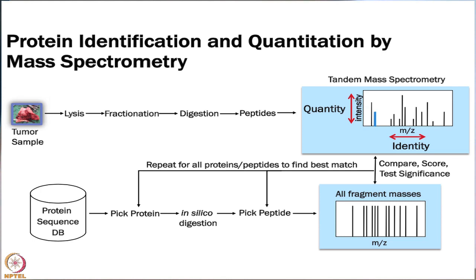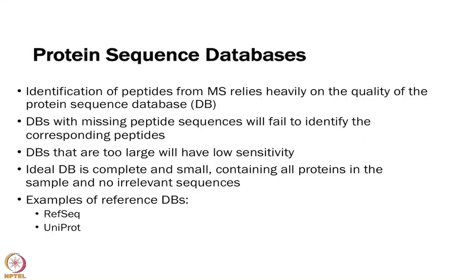If your peptide or protein is not in the database, you are never going to find it. Sequencing can help us make sure we have the right sequences in our database. Databases with missing peptide sequences will fail to identify them. If we make our database too big, we are going to lose sensitivity. We really want to make sure the database is small but complete — ideally containing all of the proteins you expect to see in the sample, but nothing else.